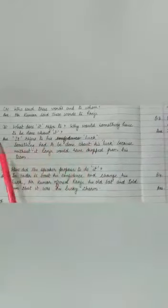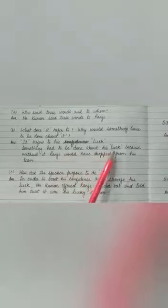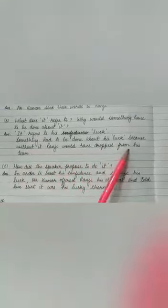Second, what does it refer to? Why would something have to be done about it? Answer is it refers to his luck. Something had to be done about his luck because without it Ranji would have dropped from his team.